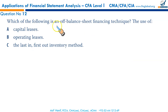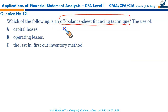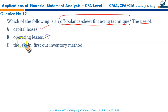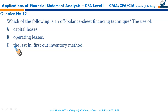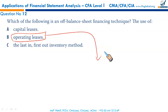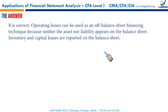Which of the following is an off-balance-sheet financing technique? Note: this question is outdated. Under current leasing standards, operating leases are now reported on the balance sheet in the same way as capital assets. However, for the purposes of this question — assuming pre-2019 standards — operating leases were considered an off-balance-sheet financing technique. B is the right answer.